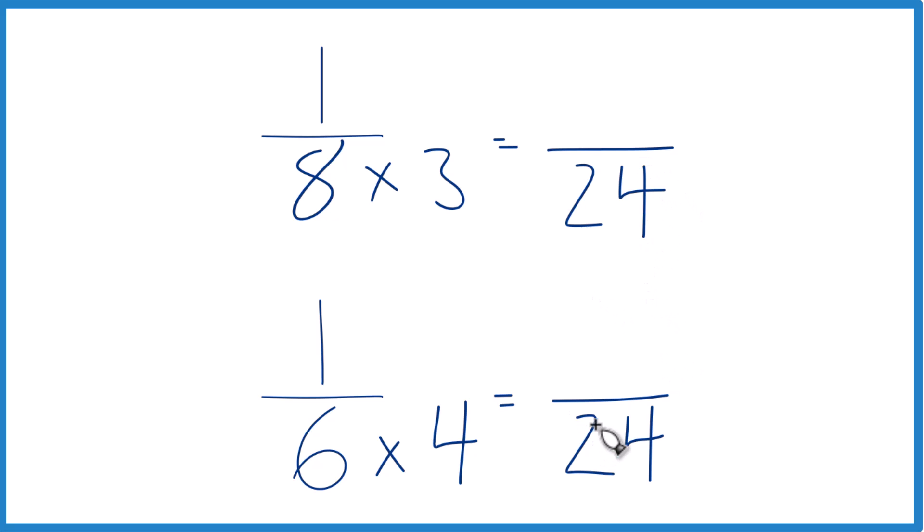So now I have a common denominator. But I can't just multiply the denominator here by 4. I also have to multiply the numerator. That's because 4 over 4 is just 1. So I'm multiplying this by 1. I don't change the value, just the way it's represented. 1 times 4, that's 4.